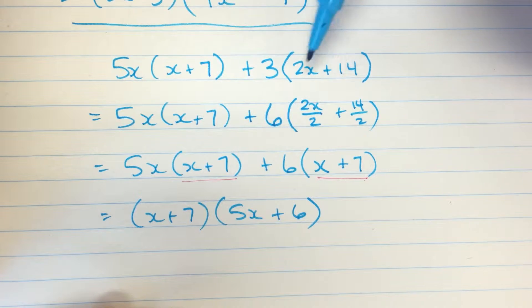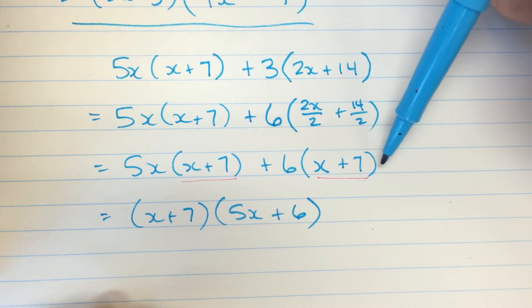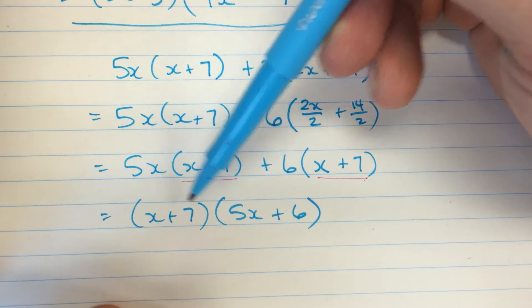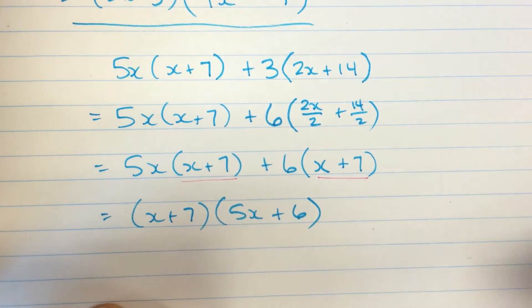And here we had to simplify, or not simplify, but factor this little bit here so that we had a nice common factor to pull out. And we had x plus 7 times 5x plus 6.